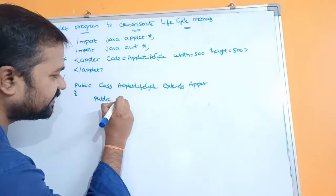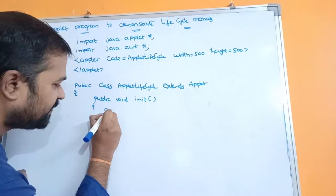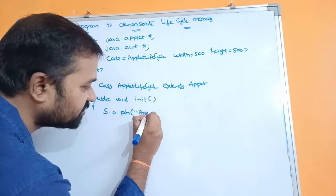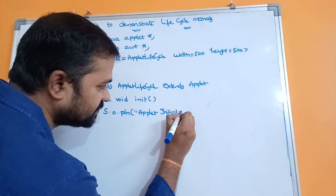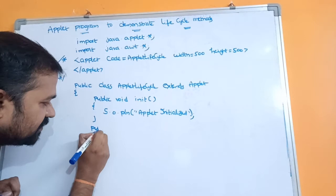In this program we have to write all five methods. The first method is the init method: public void init(). In this method we display a message using System.out.println — for example, 'Applet initialized'. We display this message to indicate the applet has been initialized.